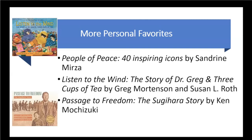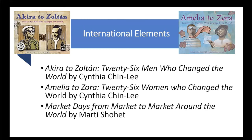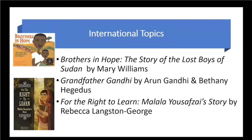Shifting to an international view, Akira to Zoltan and Amelia to Zora, both by Chin Lee, discuss 26 men and 26 women respectively who changed the world. Brothers in Hope is the story of the lost boys of the Sudan — groups of young boys with no adults walked hundreds of miles from Sudan to Ethiopia and eventually Kenya to escape the war. For the Right to Learn tells the story of Malala's perseverance to get an education in a country that prohibited her from doing so, and shows the wide impact one individual, one teenager, can have.